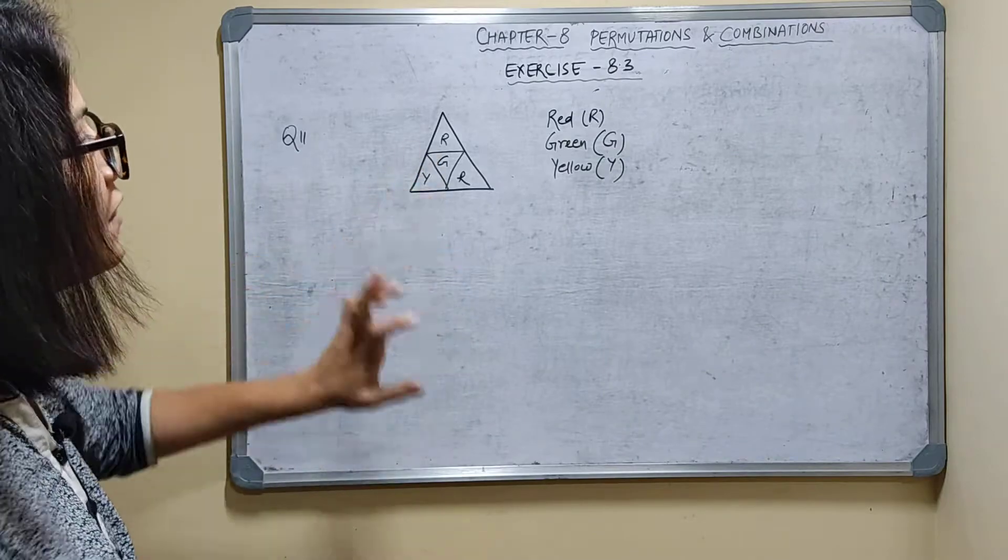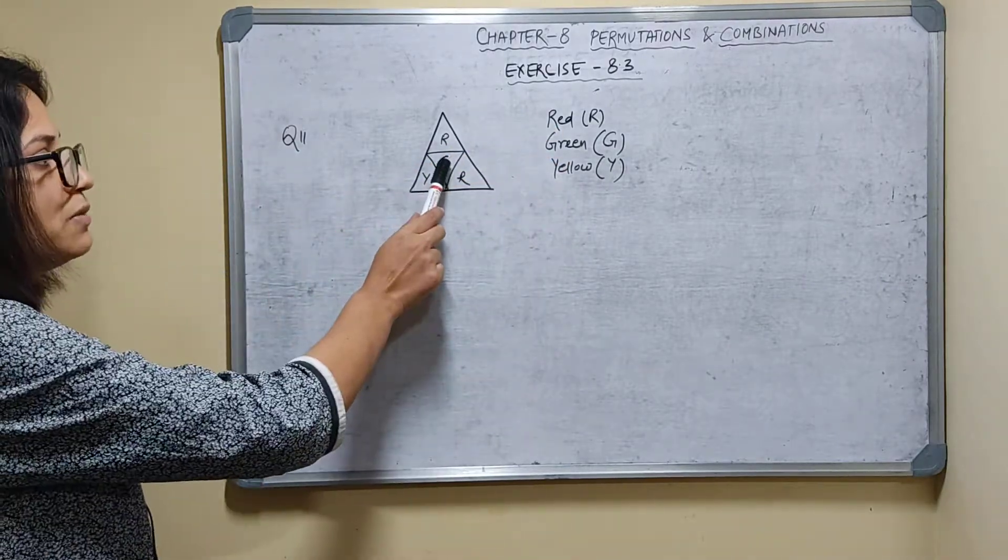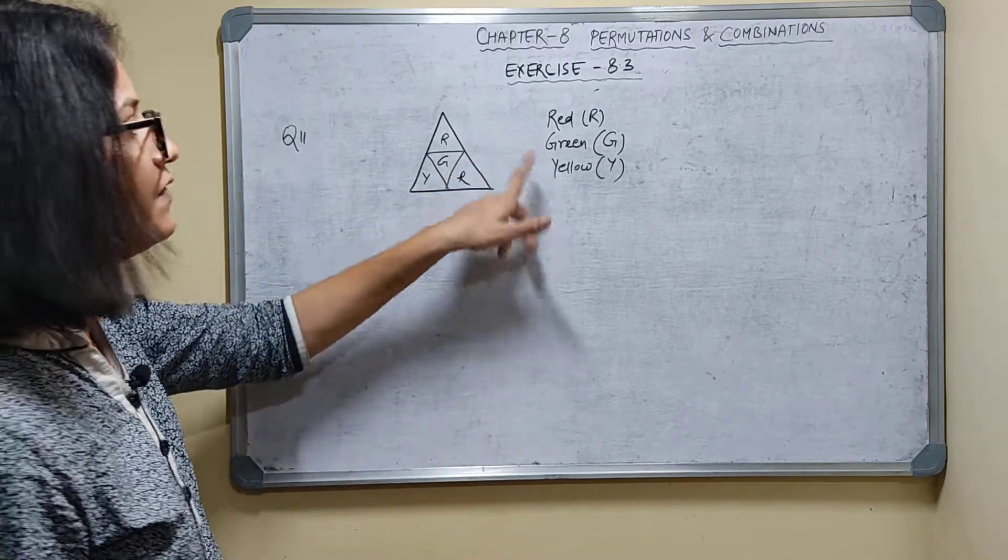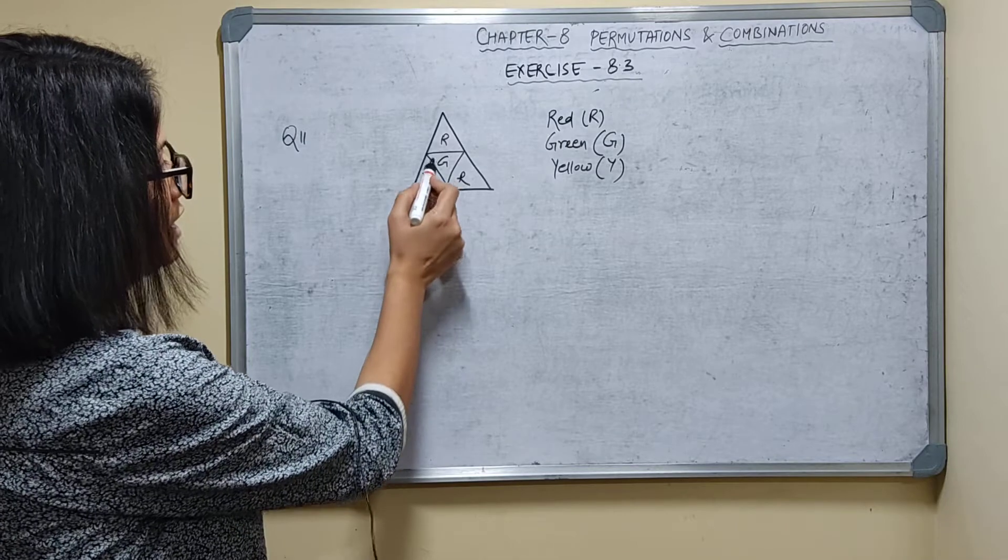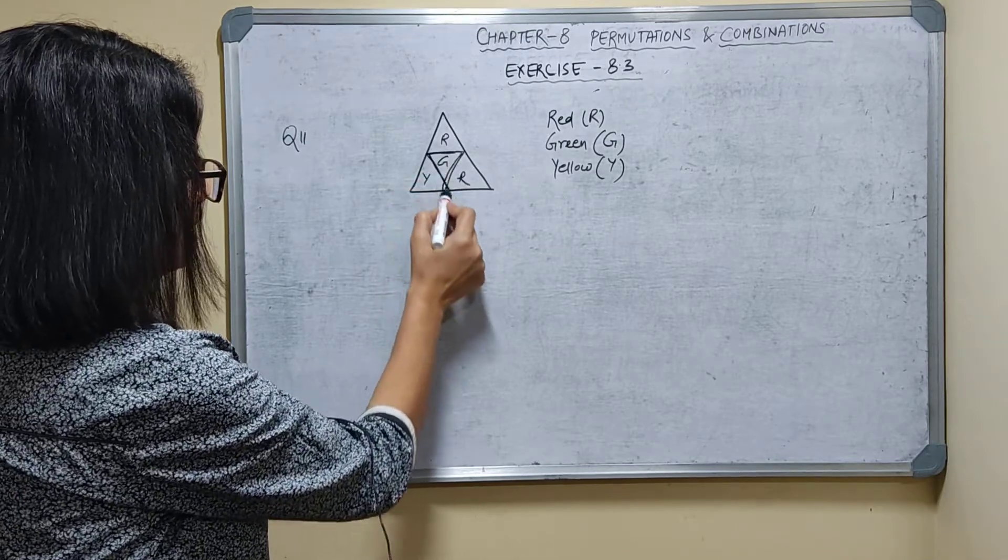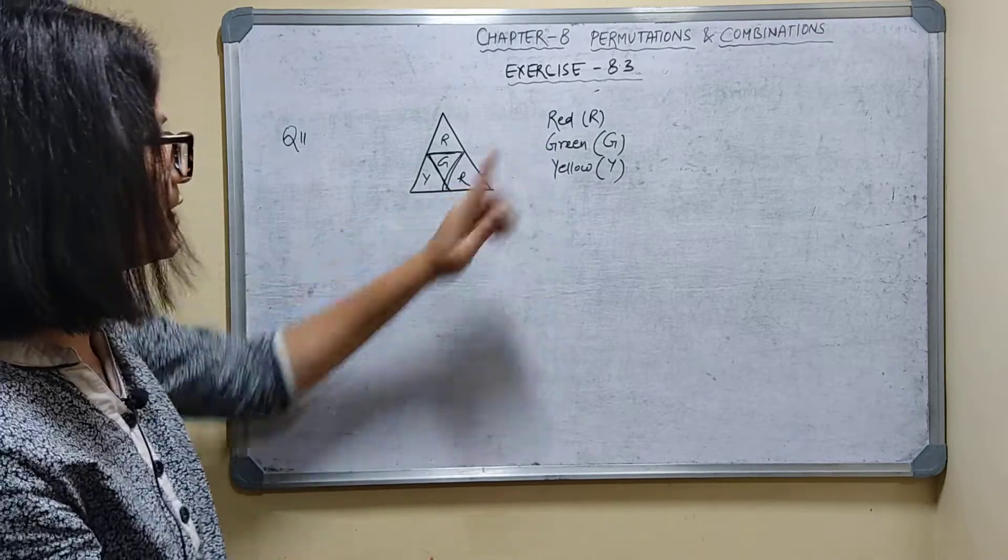The central triangle can be colored in 3 ways. I am taking 3 colors: red, green, and yellow. Let's say I'm doing it with green. From any 3 colors I can take 3 ways. So for this center triangle, 3 ways I can fill color. I am taking green.